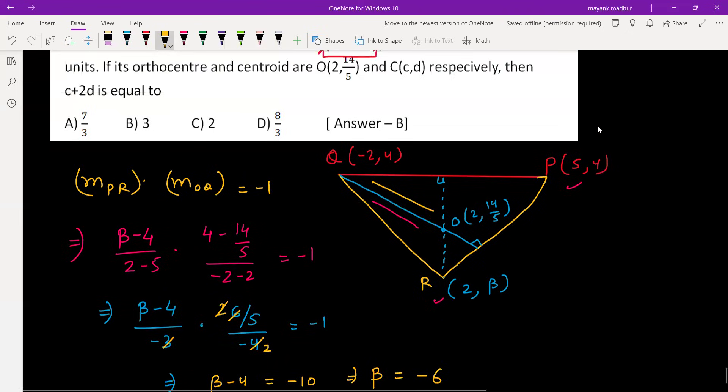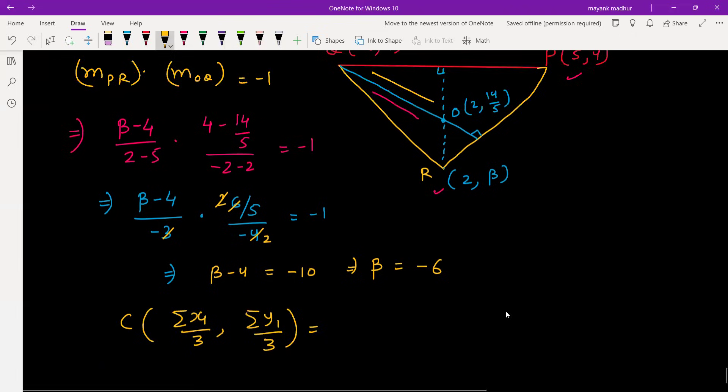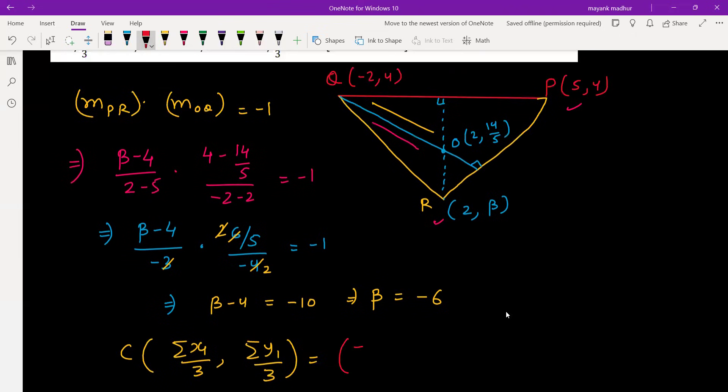Now we have to find the value of c plus 2d, where cd is the centroid. The centroid coordinate is sum of x-coordinates by 3 and sum of y-coordinates by 3. The x-coordinates of these three vertices are negative 2, 5, and 2 divided by 3.